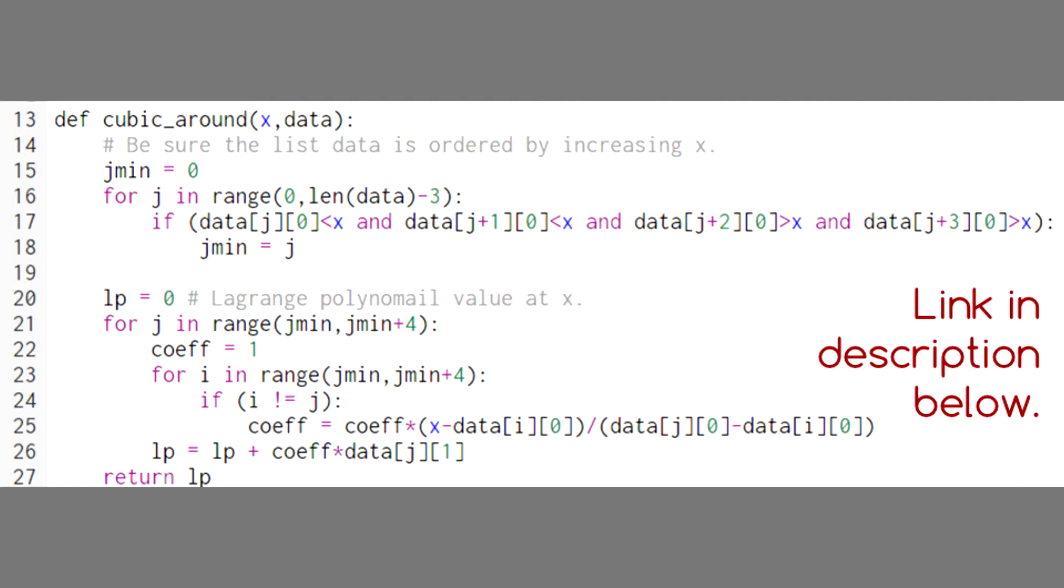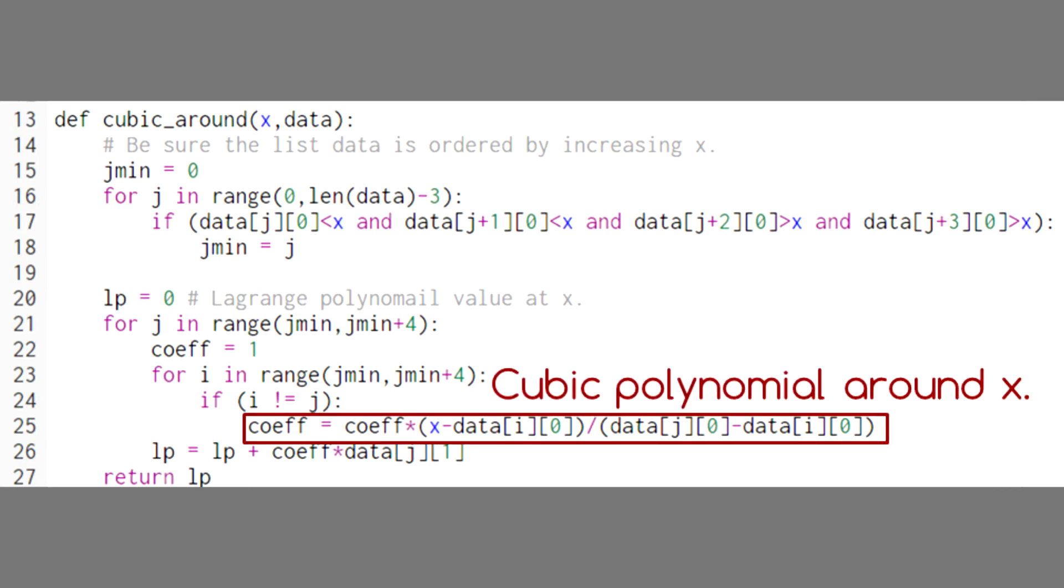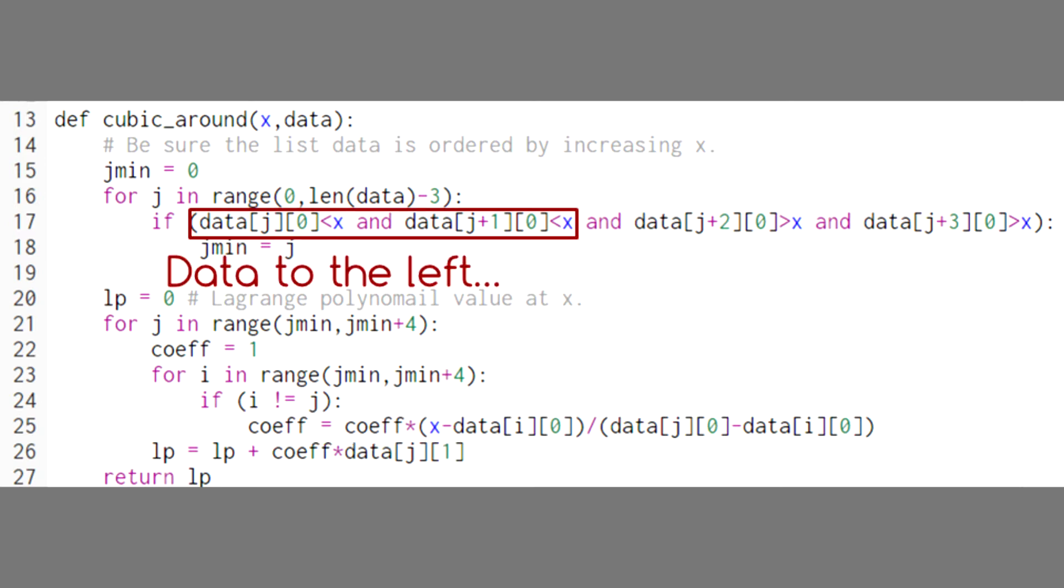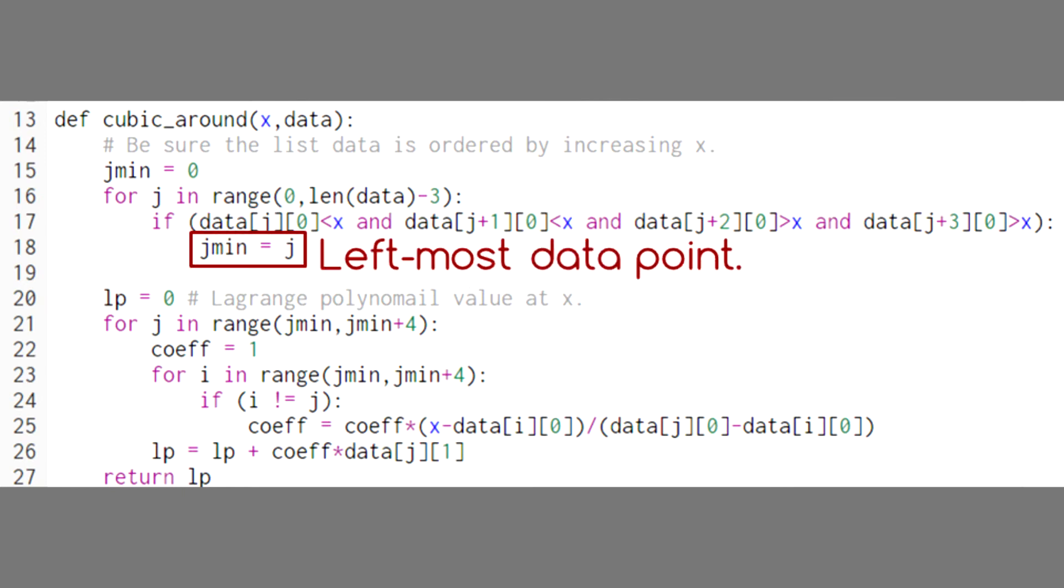In this code, which is available in a link in the description below, we've set up a function that creates a cubic Lagrange polynomial around the x value of interest. First, we find the two data points just to the left of x and the two data points just to the right of x. We call the first data point in this set j min.